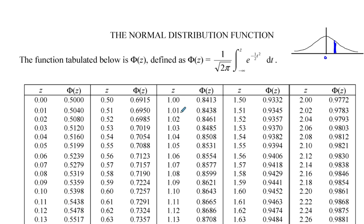So for example, supposing Z was 1. Supposing that's 1. Okay, and this number here represents the area to the left of that value of Z.